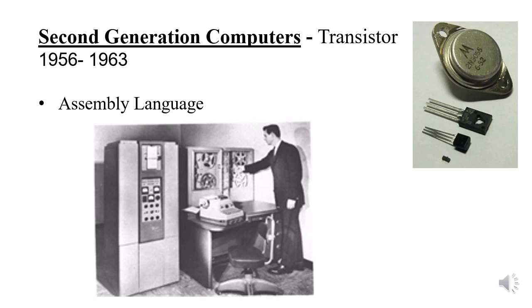A common feature of second generation computers is that they are smaller in size than first generation computers. The computer which used to fill a room has now become smaller so that it can be placed in a small space in the room. The computer is also a little shorter than the height of a normal human being. In the picture you can see there is also a chair next to this computer, meaning it was possible to work sitting down.